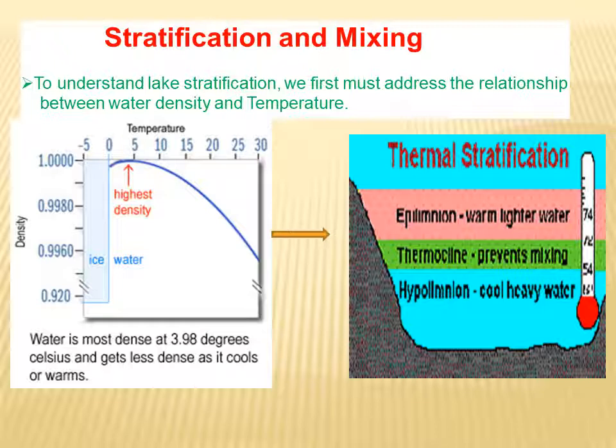This property of water and different temperatures in the seasons of the temperate region are responsible for stratification of lakes. Stratification is the formation of layers. The three layers formed are: the topmost layer is epilimnion, the middle region is thermocline or metalimnion, and the lower region is hypolimnion.